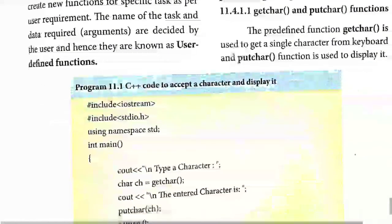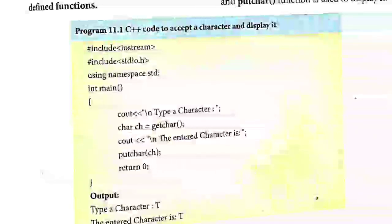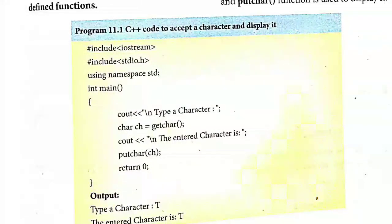For example, iostream is a header file and stdio.h is a header file. To use putchar and getchar, which are predefined functions, you have to include stdio.h. The user-defined function is the function that we create, and we will discuss that in the next class. Thank you students — this finishes the class, and we will see the rest of the topics in the next class.